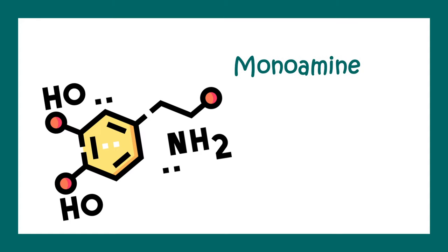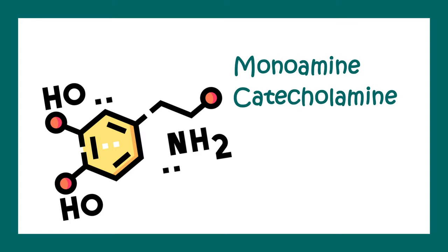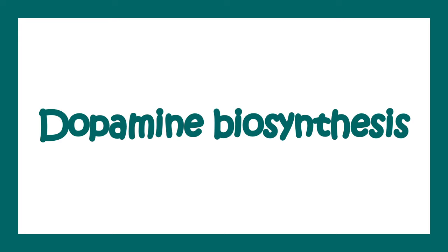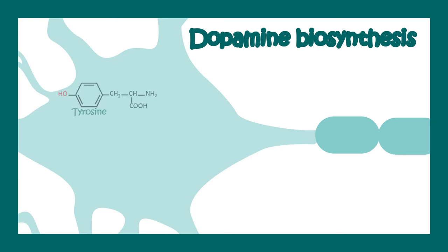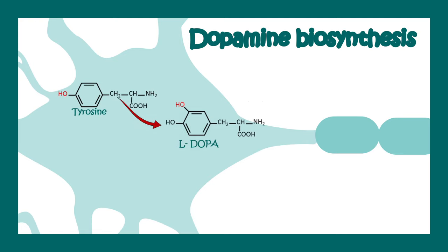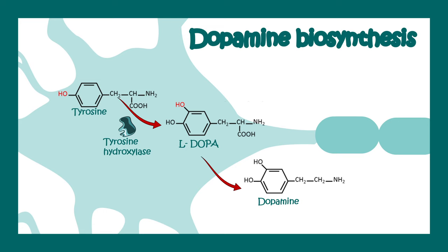Chemists call them catecholamines. Let's talk about dopamine biosynthesis. Dopamine is synthesized from the amino acid tyrosine. Tyrosine gets converted to L-DOPA with the help of the enzyme tyrosine hydroxylase.